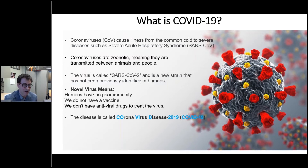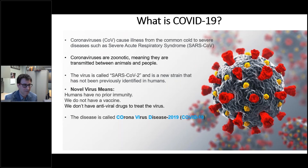The name of the virus is SARS-CoV-2, and it's a new strain that has not been previously identified in humans. A novel virus means that when it emerges for the first time, humans have no prior immunity — we've never seen it before, so we have no antibodies against it.